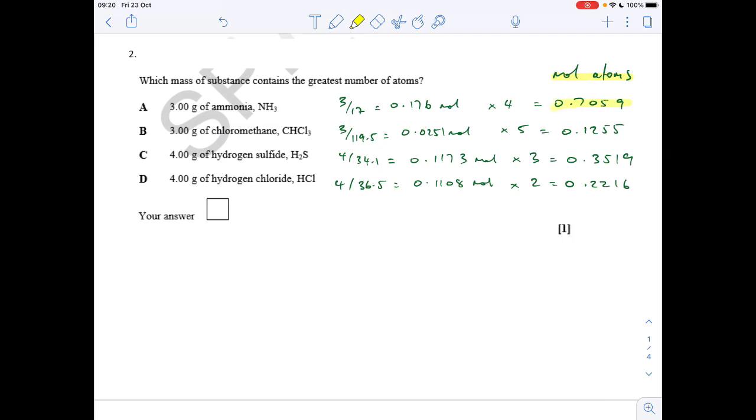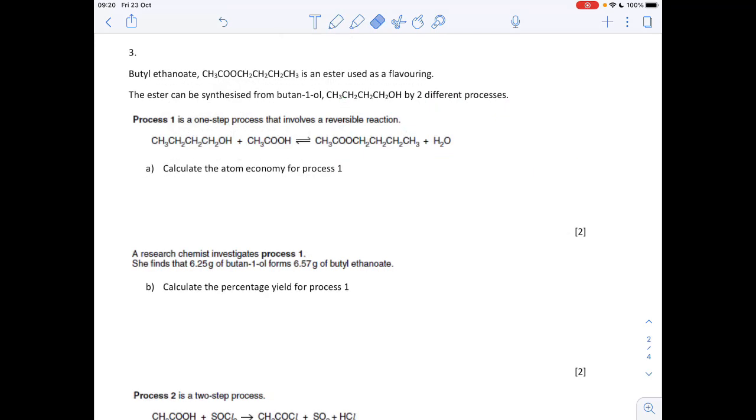Question three is all about atom economy and percentage yield. We've got to calculate the atom economy for process one. The formula is the Mr of the desired product divided by the Mr of all products times 100. Putting the numbers in: 116, the Mr for the desired, over 134, the Mr of all of the products, times 100 equals 86.6 percent.